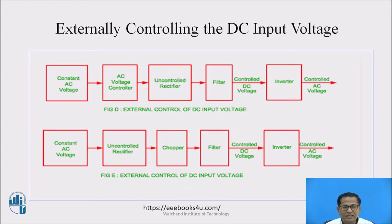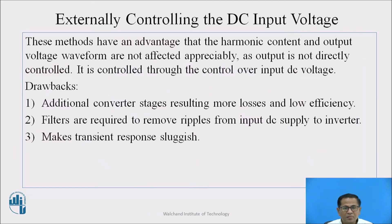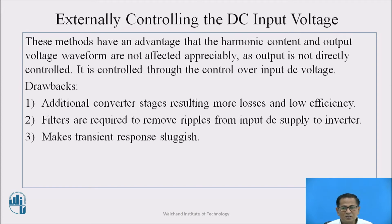Refer to figure E. In figure E, the controlled DC is obtained by changing the duty cycle of the chopper. These methods have an advantage that the harmonic content and the output voltage waveform are not affected appreciably, as the output is controlled through control over the input DC voltage. Drawbacks: additional converter stages result in more losses and low efficiency. Filters are required to remove ripples from the input DC supply to the inverter, making the transient response sluggish.